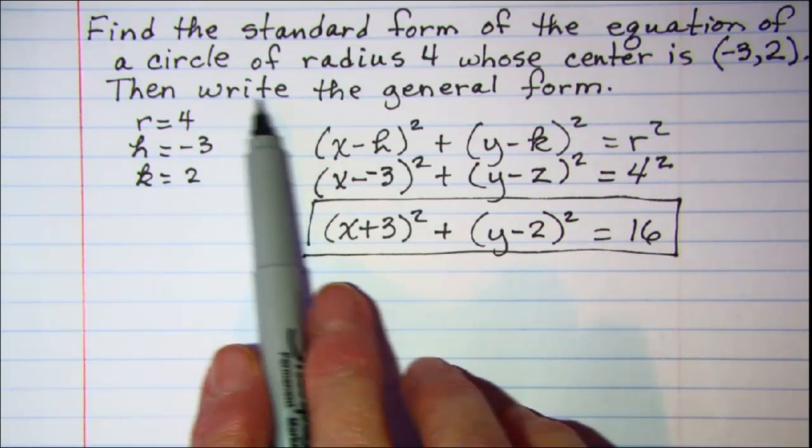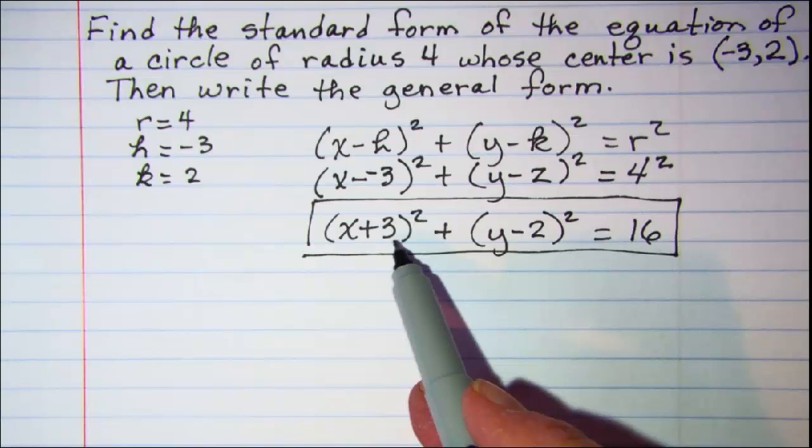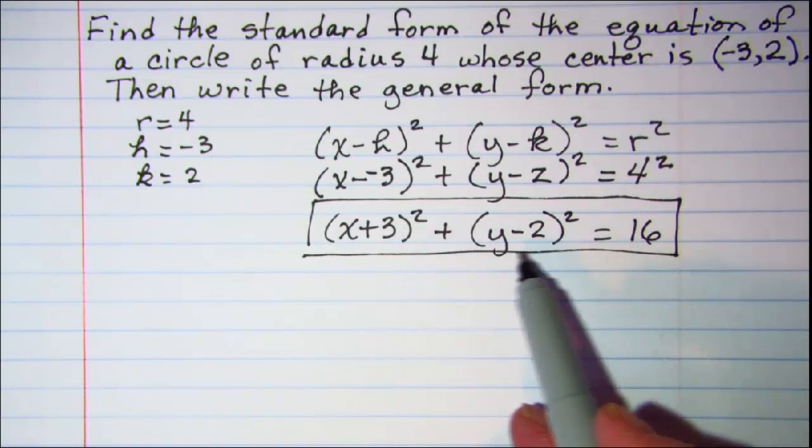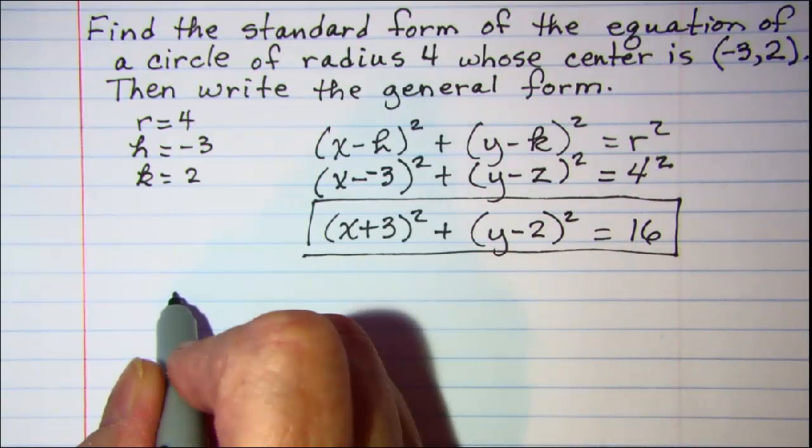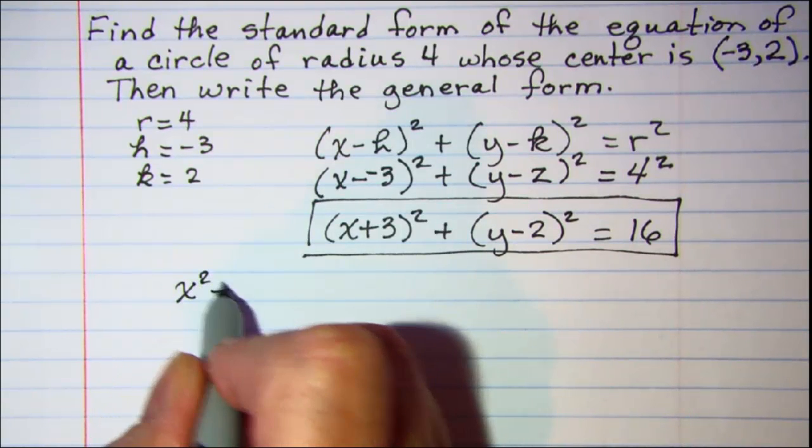Also asked to write the general form, so we're going to square these binomials. (x + 3)² is the same as x² + 6x + 9,